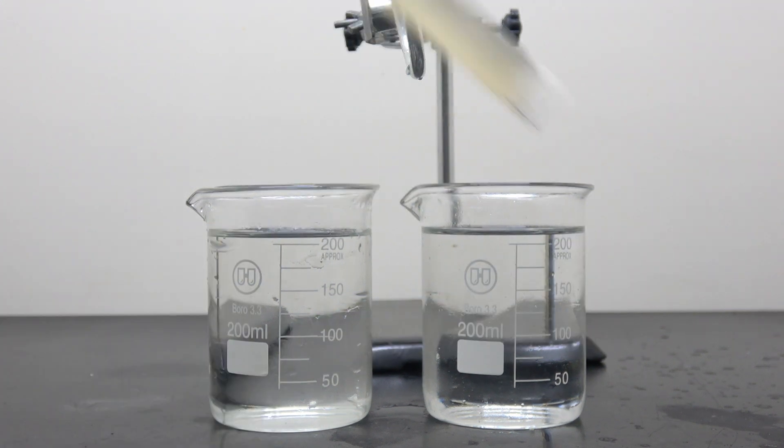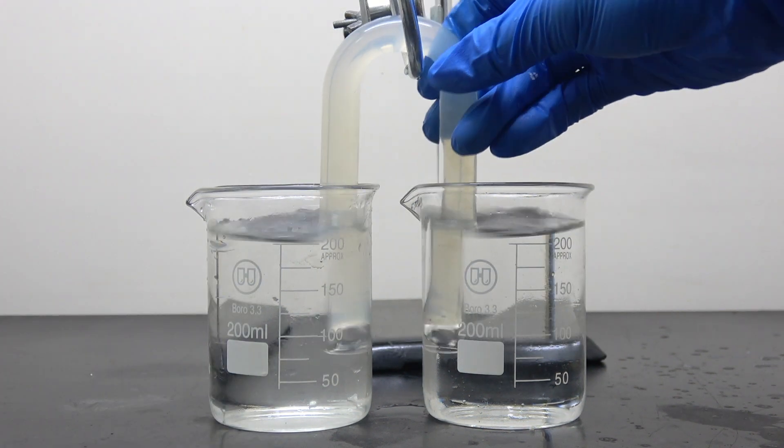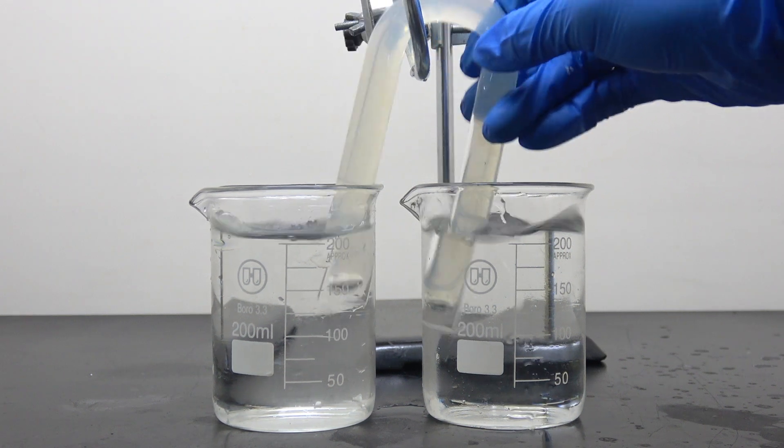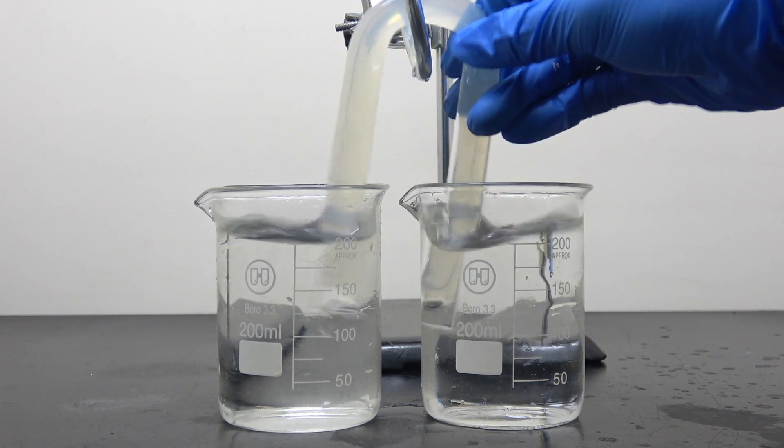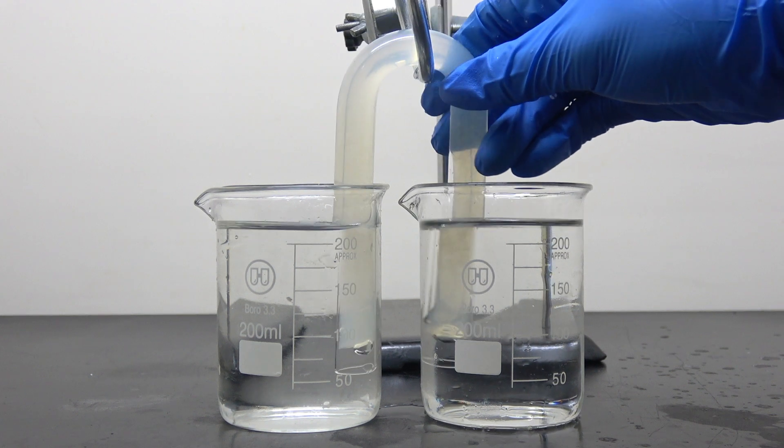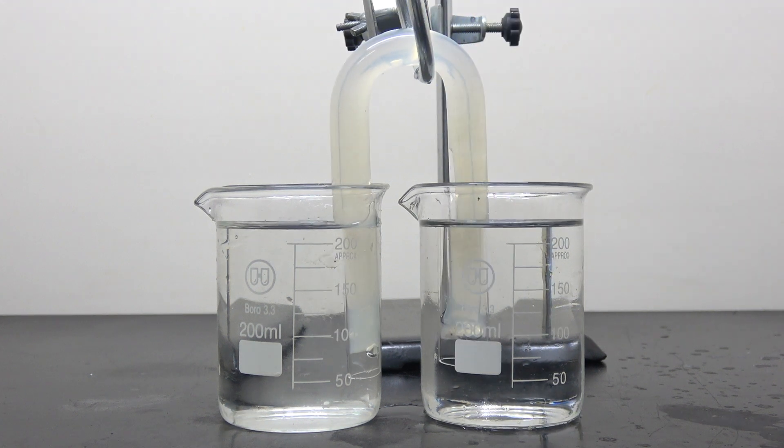The salt bridge is placed in between the two beakers, in a way that the two ends of the salt bridge are submerged by the solution. Make sure to remove the air bubbles trapped within, as air is not a good conductor of electricity.